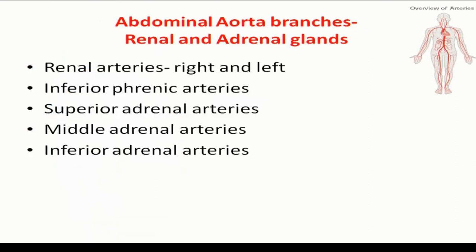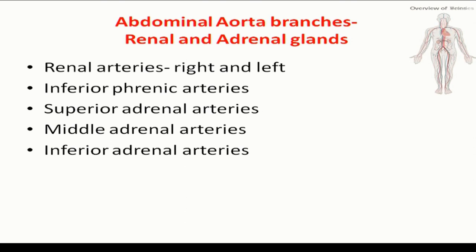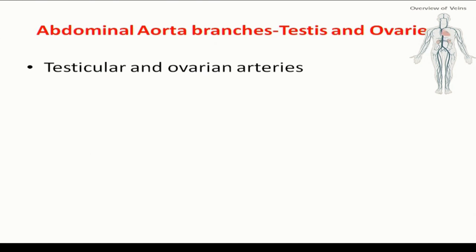Next, coming to the renal and adrenal gland — renal arteries are very important. They are paired branches: right renal and left renal. The right renal artery diameter is around 6 mm, and its origin is anterior and lateral as seen on axial CT scan sections. The left renal artery origin is posterior-lateral. Then there are the adrenal arteries.